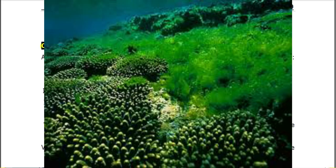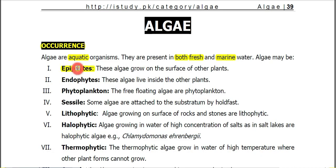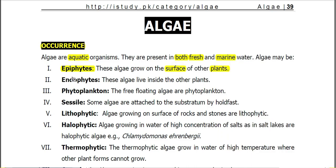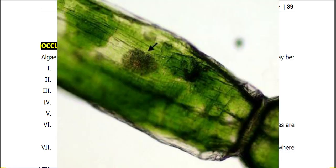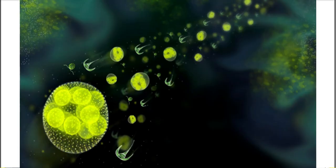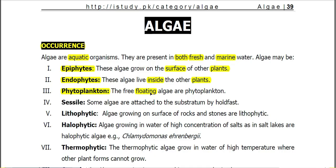Algae, on the basis of their presence, they may be epiphytes — if they are present on the surface of other plants. Endophytes are the algae that grow inside other plants. Whereas phytoplanktons are the drifting or floating algae that move with the water currents.